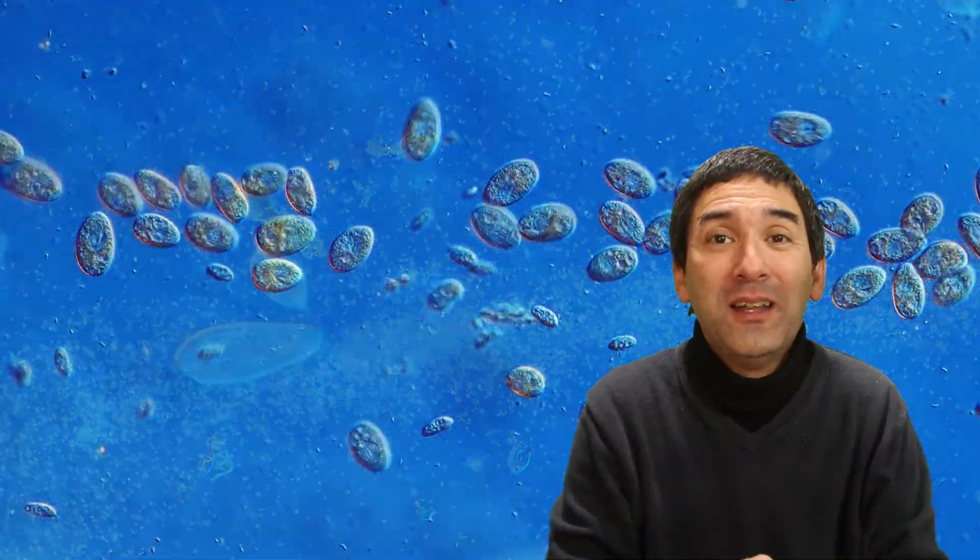So here we have, here we've got it. So that's basically how ciliates, including paramecium, vorticella and many others, how they feed on bacteria.